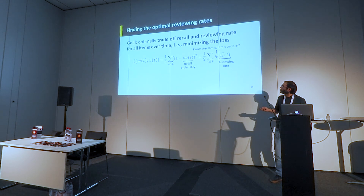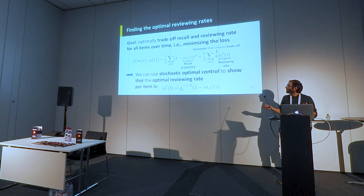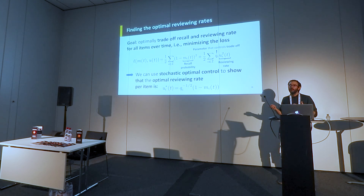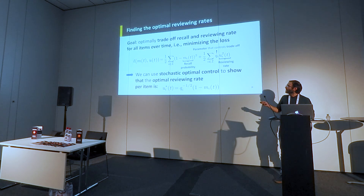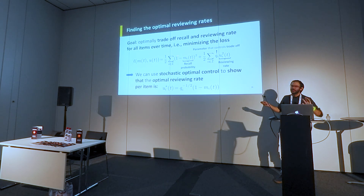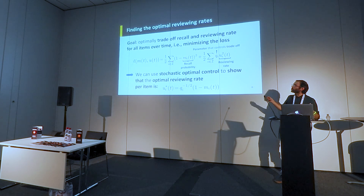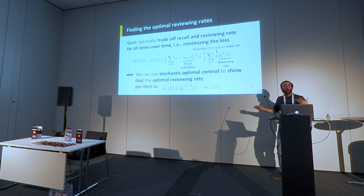Once we have a dynamical system, we can apply stochastic optimal control. If you have dynamics expressed mathematically, you can decide about the reviewing rate that is optimal. In this work, if the objective is to reduce the forgetting probability while penalizing high reviewing rates, we managed to show that the optimal reviewing rate is proportional to the probability of recalling.